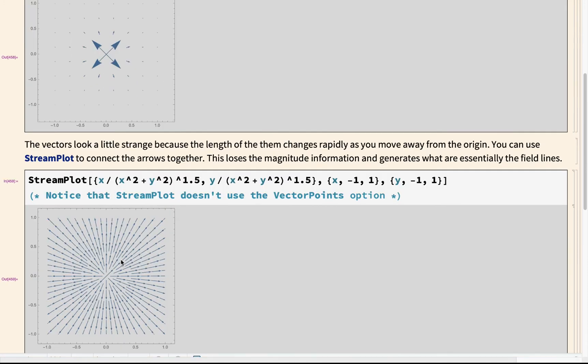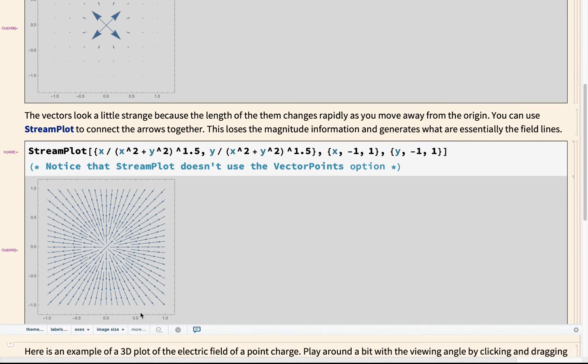So another way to avoid that is just to use StreamPlot instead of VectorPlot. I'm going to go ahead and run that. Notice that StreamPlot doesn't use the VectorPoints option. So it just has a default number of arrows that it draws. And it also is only giving the direction of the electric field and not the magnitude. So all of these arrows have the same length. So it doesn't give me magnitude information, but it does give me direction information.